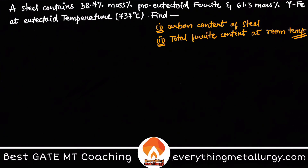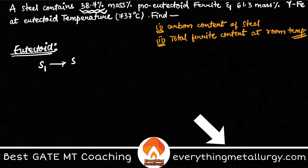Now let's look at the particular question I received today. We'll use the lever rule concept to explain this. A steel contains 38.7% proeutectoid ferrite.